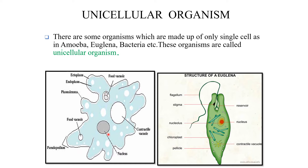See this diagram — this is amoeba. The outer layer has foldings called pseudopodia, which are false feet — the 'P' is silent. With the help of pseudopodia, it can move. This is the nucleus, the controlling center of the cell. This is the food vacuole, where food is stored. This is the contractile vacuole, where all waste is collected and then sent out.